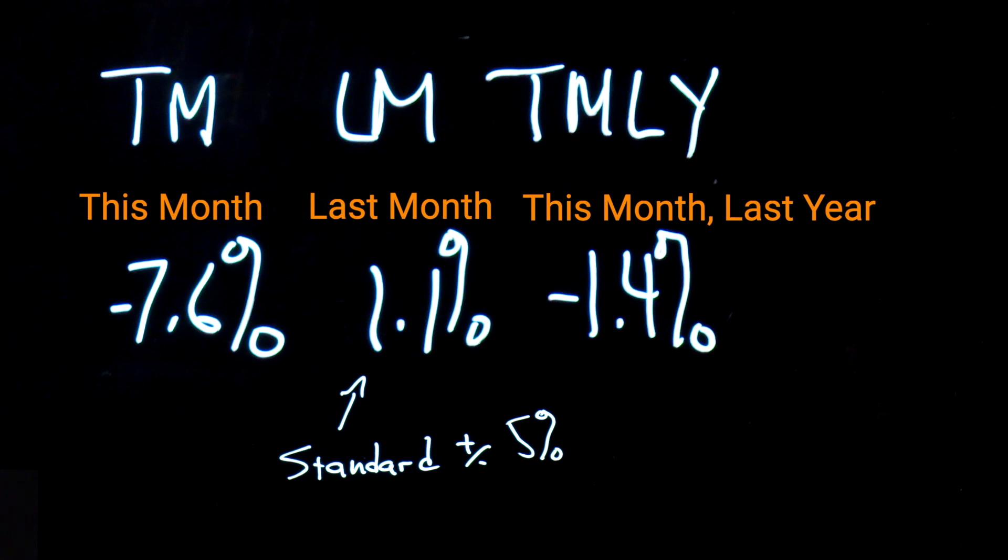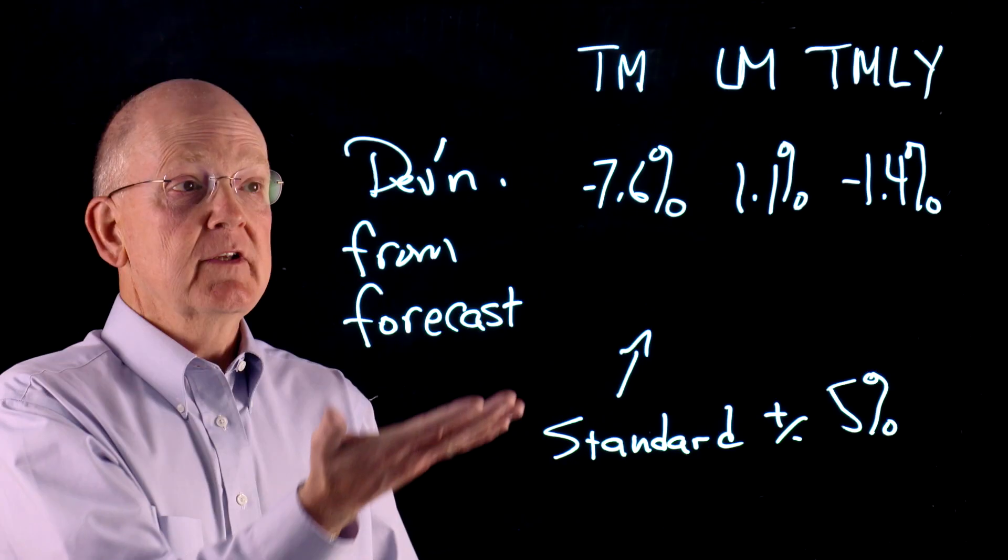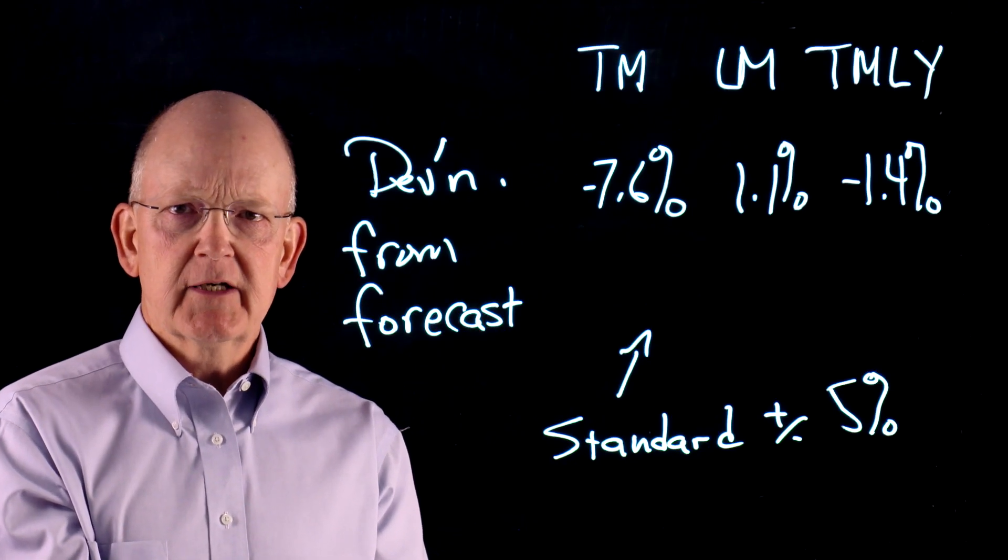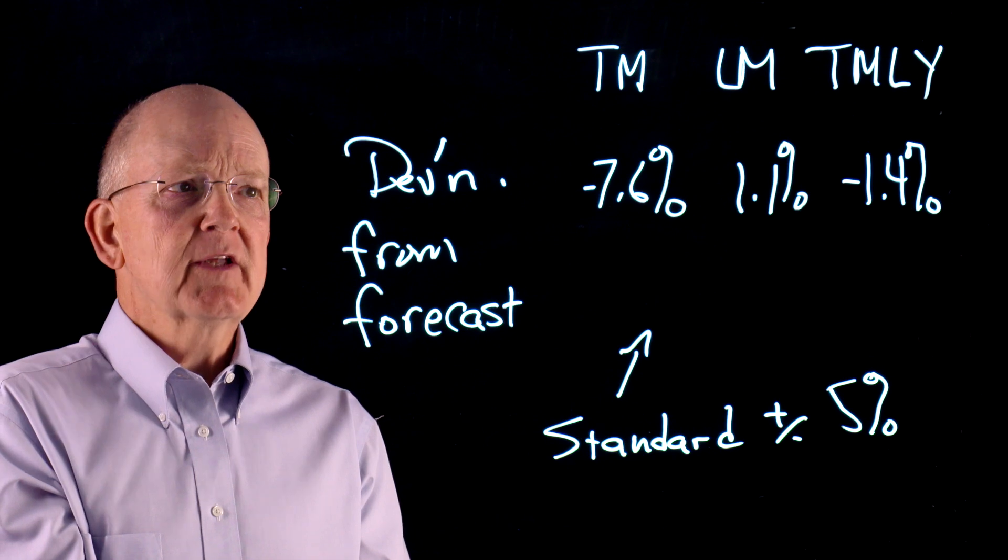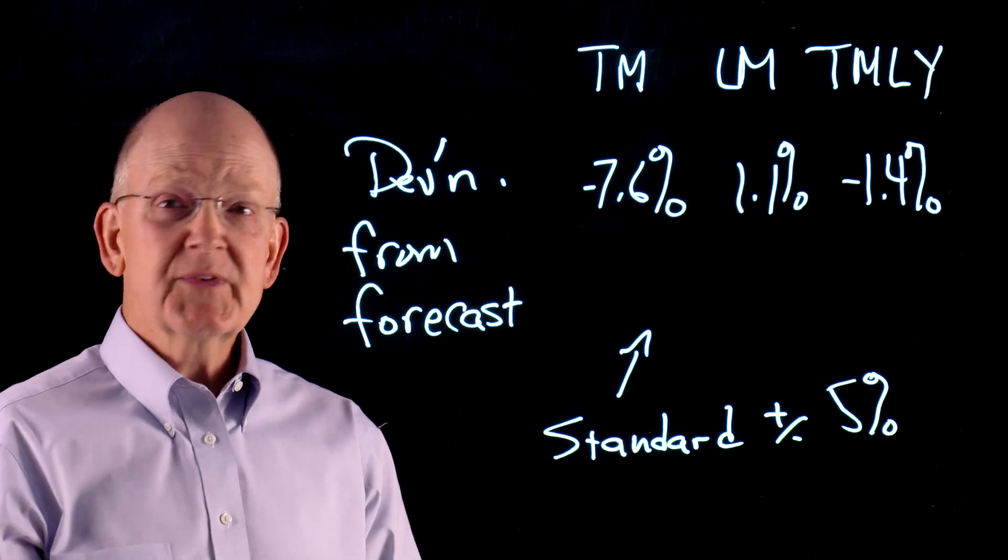So this might be a single line from a traditional management report. And the question I might ask is, what action do you take based on this management report? What can you possibly do? You can say, well, we're outside of our standard. But what do you do from there?